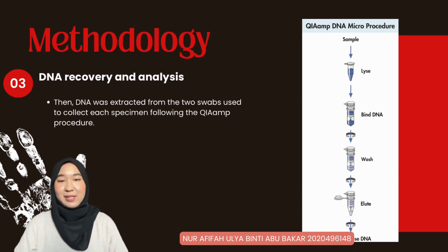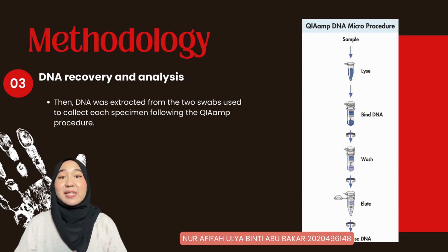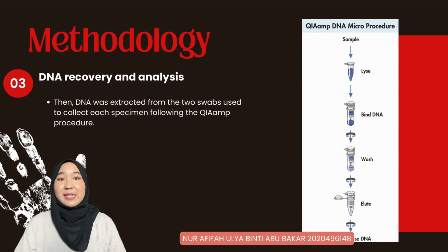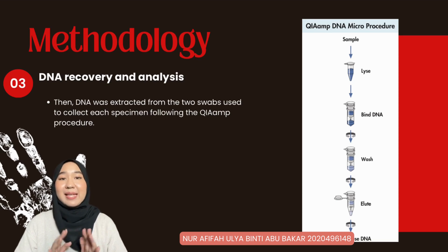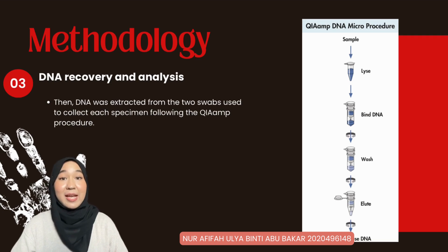The DNA was extracted from the two swabs used to collect each specimen following the QIAGEN procedure. The steps are: first, sample preparation; followed by cell lysis; then binding of DNA to the column; removal of residual contaminants; and lastly, eluting the DNA.